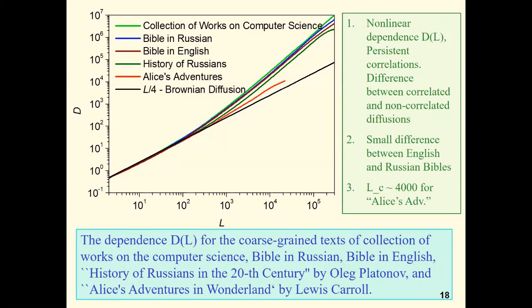Here we see the dependence D on L for the following coarse graining texts: the collection of work on computer science, Bible in Russian, Bible in English, History in Russian by Oleg Platonov, and Alice's Adventures in Wonderland by Lewis Carroll. Looking at these curves, we notice the following: We see once more the persistent correlation in all texts, small difference between English and Russian Bibles. For Alice's Adventures, the correlation length is approximately equal to four thousand. The most important conclusion is the persistent correlations are an intrinsic property of literary texts.